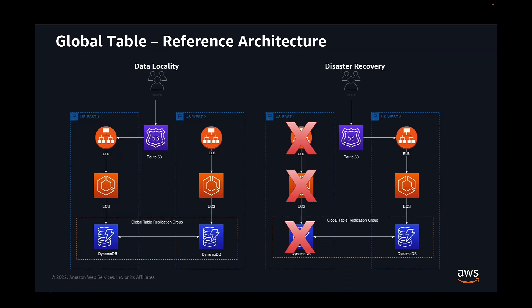If a single AWS region becomes isolated or degraded, your application can redirect to a different region and perform writes against a different table replica. You can apply custom business logic to determine when to redirect requests to another AWS region. If a region becomes isolated or degraded, DynamoDB keeps track of any writes that have been performed but not yet propagated to all the table replicas. When that region comes back online, DynamoDB resumes propagating any pending writes from that region to the replica tables in other regions, and also resumes propagating writes from other replica tables back to the recovered region.